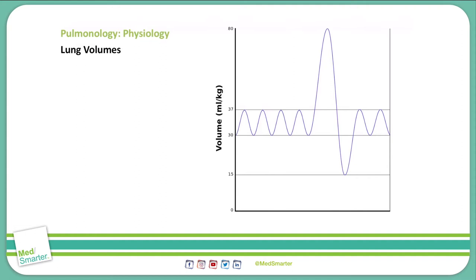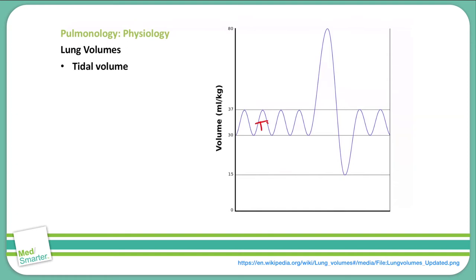First is tidal volume. The tidal volume is the air that moves into the lung during an inspiration and expiration — it represents your normal inspiration-expiration curve.